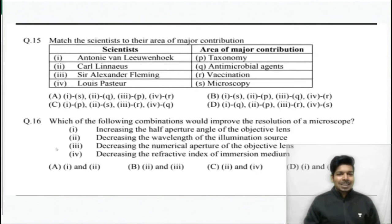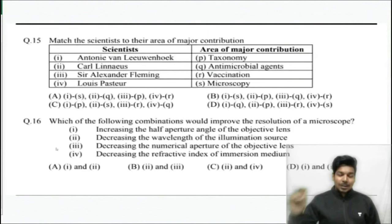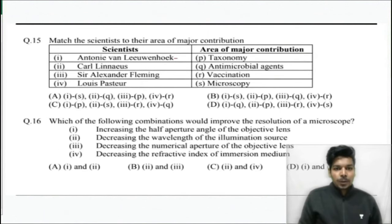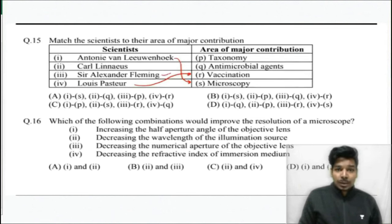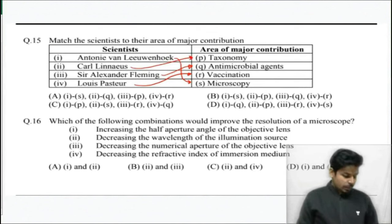Question number 15: Who discovered what? Louis Pasteur, Antony van Leeuwenhoek, Alexander Fleming, Linnaeus. Antony van Leeuwenhoek is associated with microscopy. Louis Pasteur worked on vaccination. Alexander Fleming discovered antimicrobial agents. Carolus Linnaeus is related to taxonomy. The answer should be B.